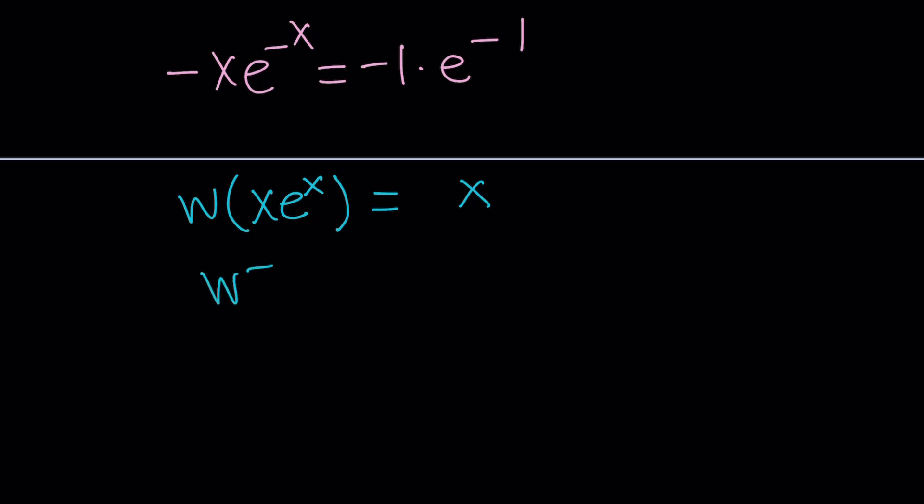So in other words, if you invert both sides, you're going to get this function, which is x e to the x. And again, if you invert it again, you're going to get Lambert's W function.